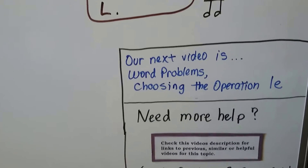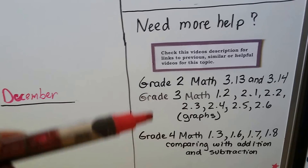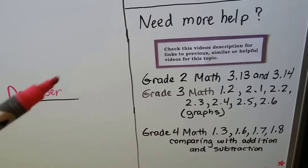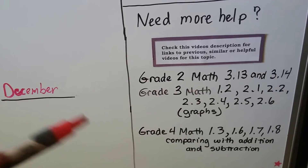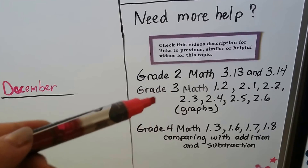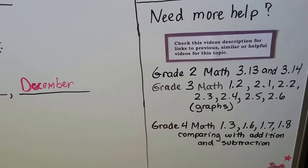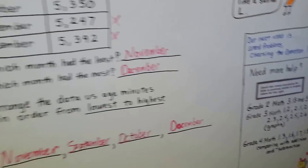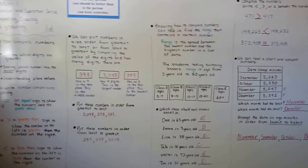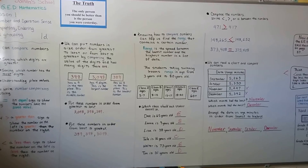Our next video is going to be word problems and choosing the operation — lesson 1E. If you need more help, there are lots of links in the description. You can watch this video again, or click the links for a grade 3 video on bar graphs and line graphs, or a grade 4 video on comparing numbers with addition and subtraction and place value. There's lots of help available. Keep your grit, don't let anything stop you. I'll see you next video, bye!